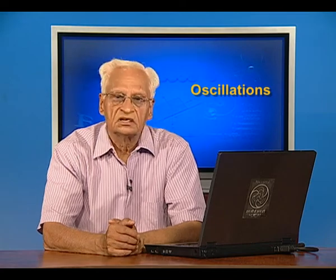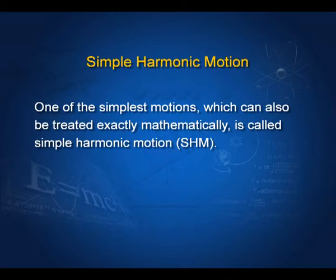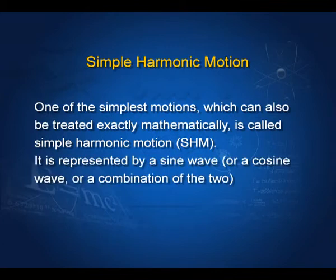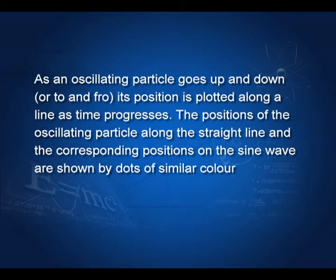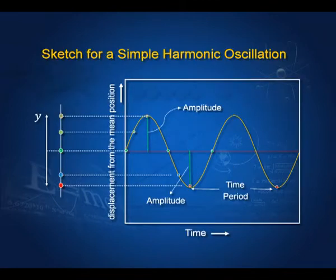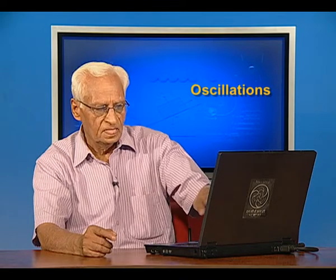One of the simplest motions that can also be treated exactly mathematically is called simple harmonic motion, or SHM. It is represented by a sine wave, a cosine wave, or a combination of the two. As an oscillating particle goes up and down, its position is plotted along a line as time progresses, giving a curve which is either a sine or cosine curve. The time period spans from one peak to the next, and the maximum displacement from the mean position is the amplitude.